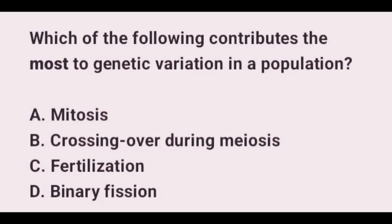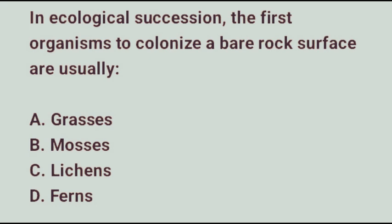Question nine: In ecological succession, the first organism to colonize a bare rock surface is usually lichens. Succession is the gradual replacement of one community by another over time. In primary succession on bare rock, lichens grow first, secreting acids that break rocks into soil. Mosses appear after soil formation, followed by grasses and shrubs, and finally forest forms the climax community. Lichens are the true pioneer organisms because they break rock into soil.